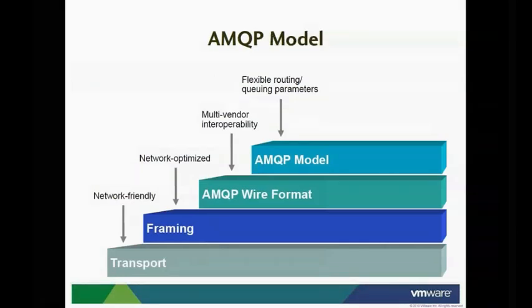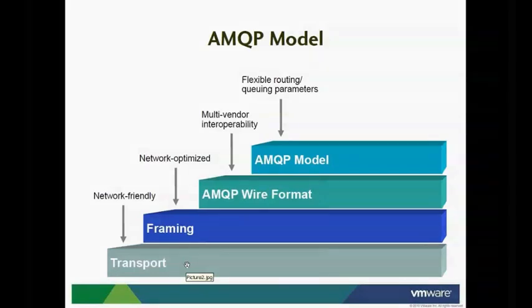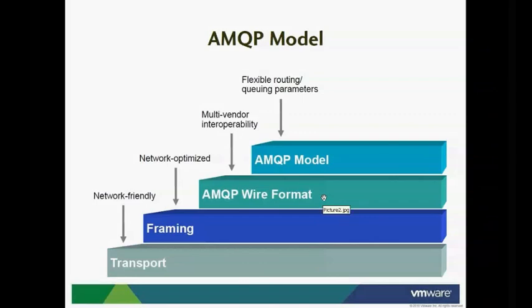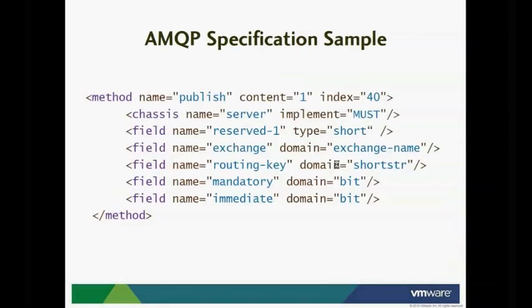If we look at the model from the side on, at the bottom the transport layer is network-friendly — it runs over TCP/IP and uses a single port to make it easy to configure firewalls. The framing is network-optimized with very small packets and extremely small overhead. The wire format is defined in an XML file to ease interoperability, and the routing layer on top of that decides where messages go. As an example of the XML specification defining what the framing protocol looks like, this is what the publish message looks like, and I'll be taking a look at what the Erlang implementation of this translates to using our mechanical translation process.